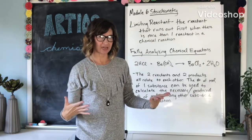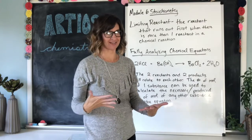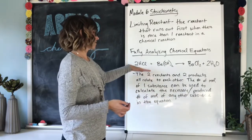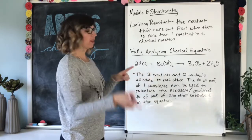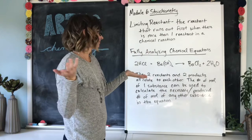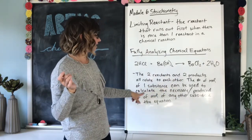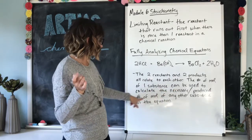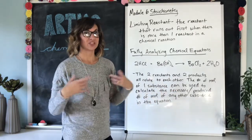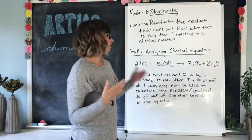So this is what you've been doing, but just written out as a kind of wordy sentence. I hope you like wordy sentences. The two reactants and two products of this equation here all relate to each other. The number of moles of one substance can be used to calculate the necessary or produced number of moles of any other substance in the equation. So this is what we mean when we say we can fully analyze chemical equations.